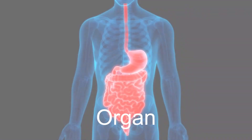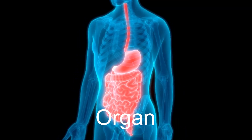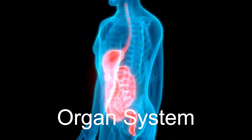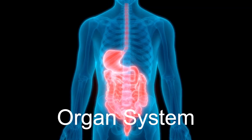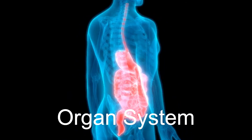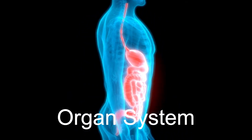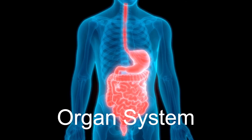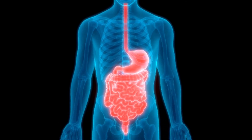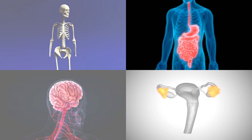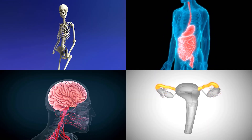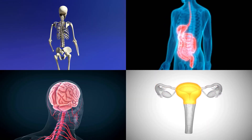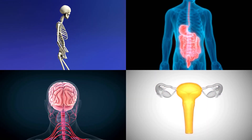An organ system is a higher level of organization that consists of functionally related organs. Examples of organ systems in an animal include skeletal, nervous, and reproductive systems.